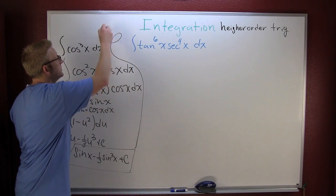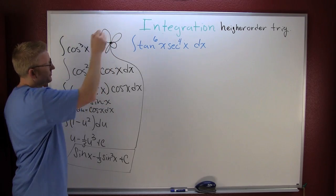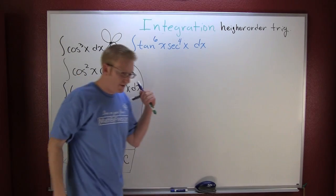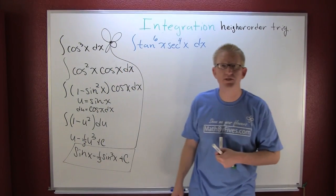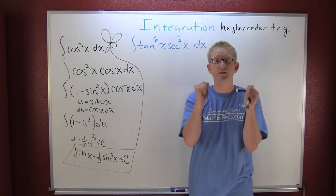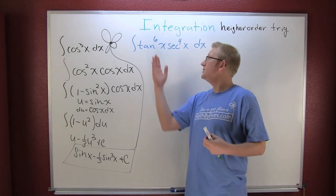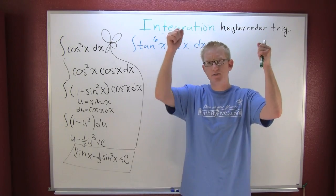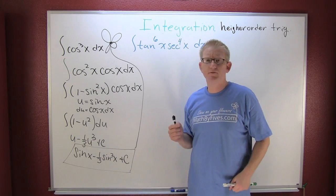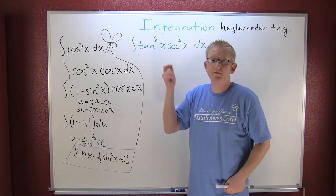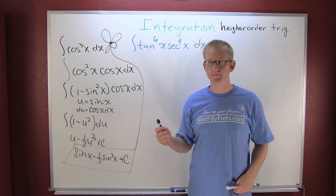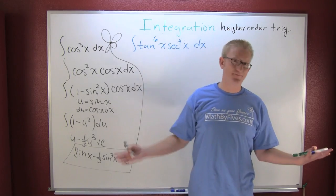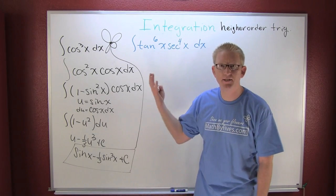Alright, so over here in this other one, we're still going through and trying to find u du. So we take a look at the bigger one, the more complicated one, the tangent to the sixth power. What are we looking for in tangent? We're looking for its derivative, and what is the derivative of the tangent? Secant squared, yeah.